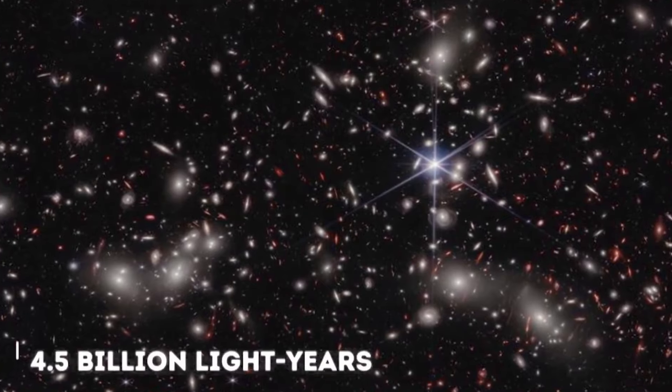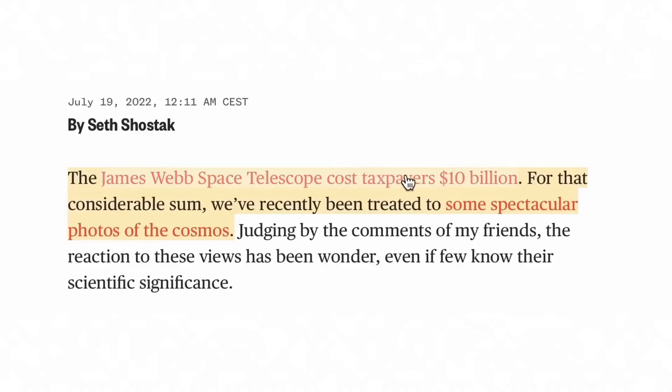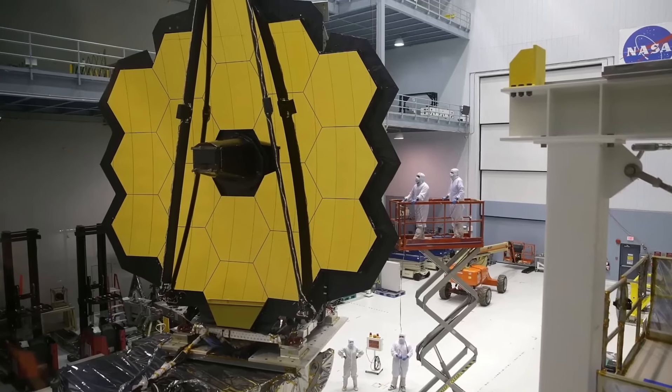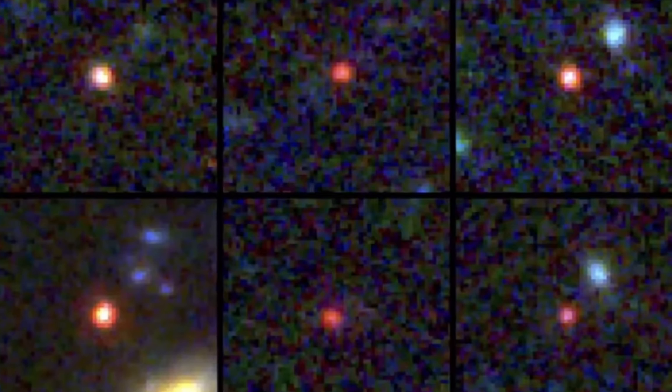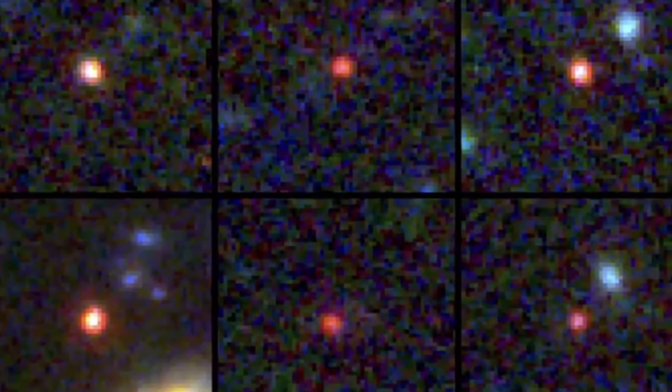The astronomer Edwin Hubble figured out in the 1920s that the universe is expanding, and in the late 1990s, his namesake, the Hubble Space Telescope, found evidence that the expansion is accelerating.